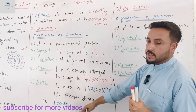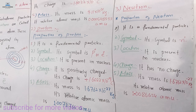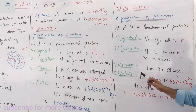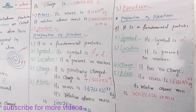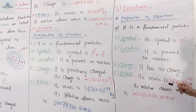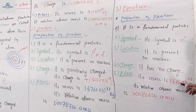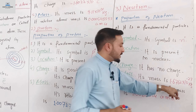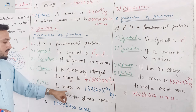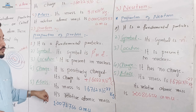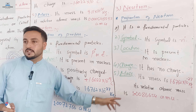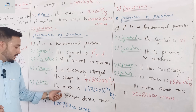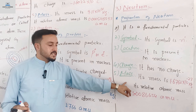The proton is located in the nucleus. The proton carries a positive unit charge. The mass of the proton is 1.67262 × 10⁻²⁷ kg. The relative atomic mass of the proton and neutron are closely related.